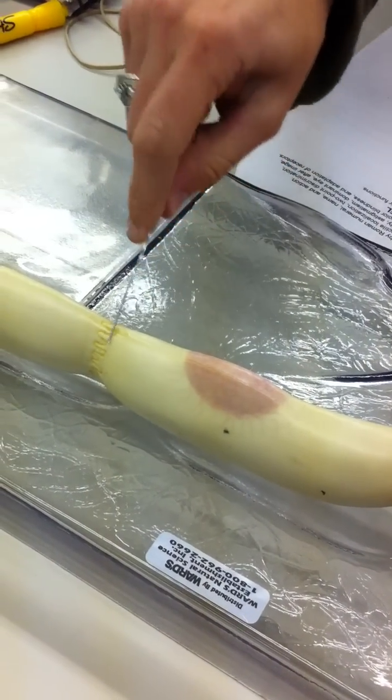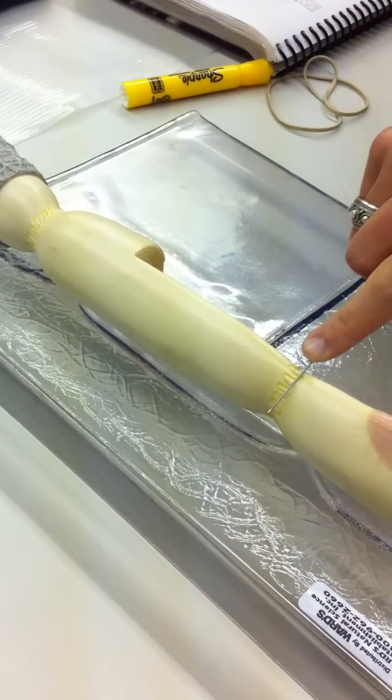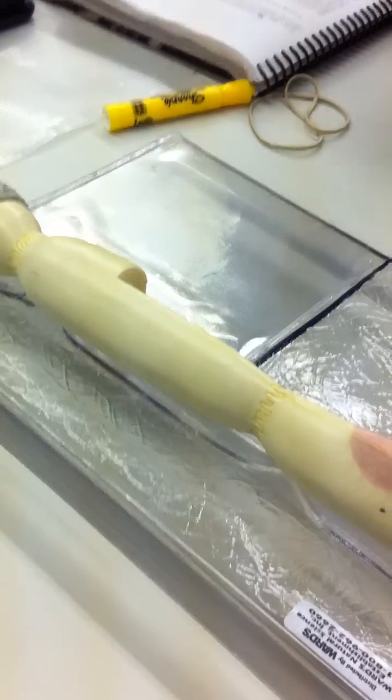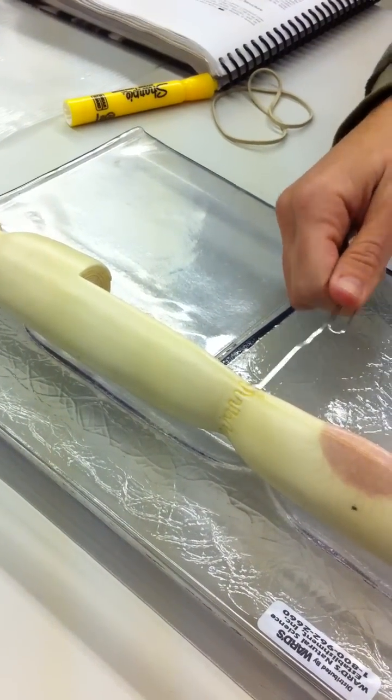Then you have your nodes of Ranvier, which are these little indentations here, where the myelin, technically there is no myelin there, because that's where it allows for ions to flow through. So there's no myelin there in the nodes.